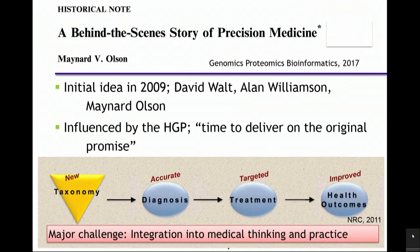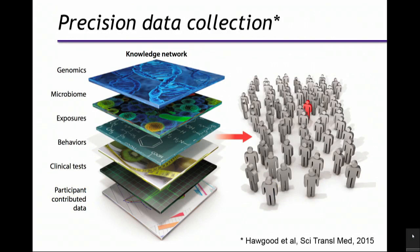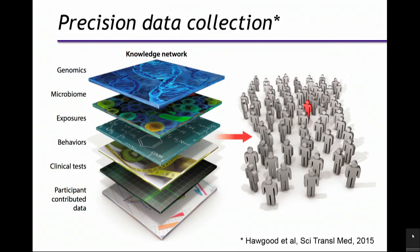This model — in the original report — shows a new taxonomy of disease that would enable more accurate diagnosis, more targeted treatment, and improved health outcomes. The major challenge, which the planners recognized, was integration into medical thinking and practice. Speaking for myself and all my colleagues in medicine, it's really hard to change medicine. In my view, precision applies nicely to the kinds of data collected and how those data are analyzed, but it is not a good fit for the underlying biology.